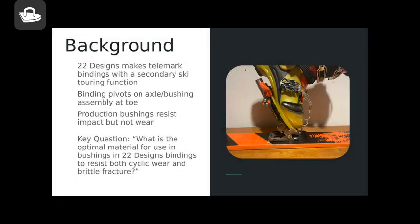Some background: The snowsports industry has seen a recent explosion in consumer need for ski equipment to provide easy access to the backcountry. While not as widespread as alpine skiing or snowboarding, telemark skiing is similarly affected by this increase in demand. 22 Designs, founded by two Clarkson alumni, make telemark bindings with a secondary ski touring function shown in the figure to the right. The binding pivots at an axle bushing assembly at the toe, which is press fit into the base of the binding shown in the figure to the right.